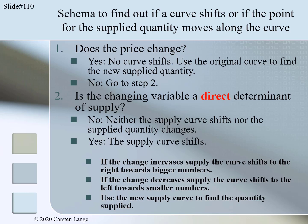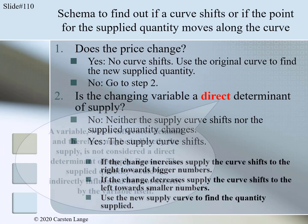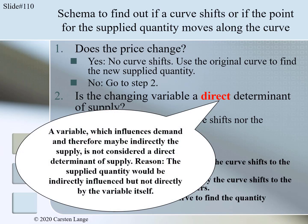Before you can apply this scheme, we have to talk about what is meant by direct determinant. A variable which influences demand and therefore may indirectly influence supply is not considered a direct determinant of supply — the supplied quantity would be indirectly influenced, not directly by the variable itself. Here is an example: after E. coli was found in spinach in California in September 2006, the spinach demand went down significantly, eventually influencing spinach production and supply too. But it was the spinach demand and the resulting price change which influenced spinach production directly, not the E. coli news. Therefore, the E. coli news would not be considered a direct determinant of supply. These news were actually a direct determinant of demand for spinach, which would shift the demand curve and not the supply curve.